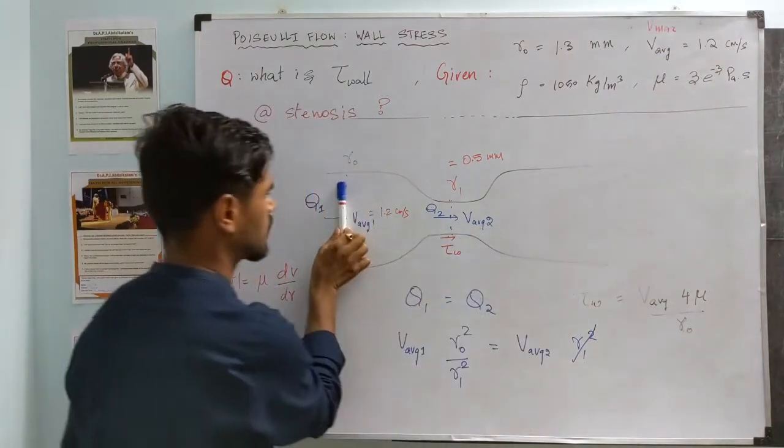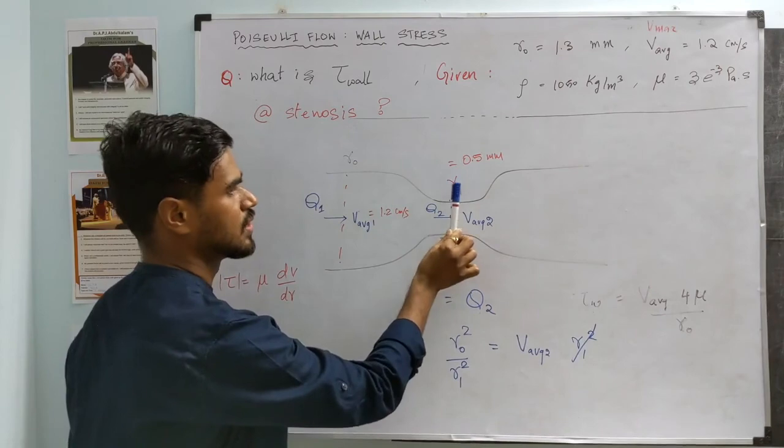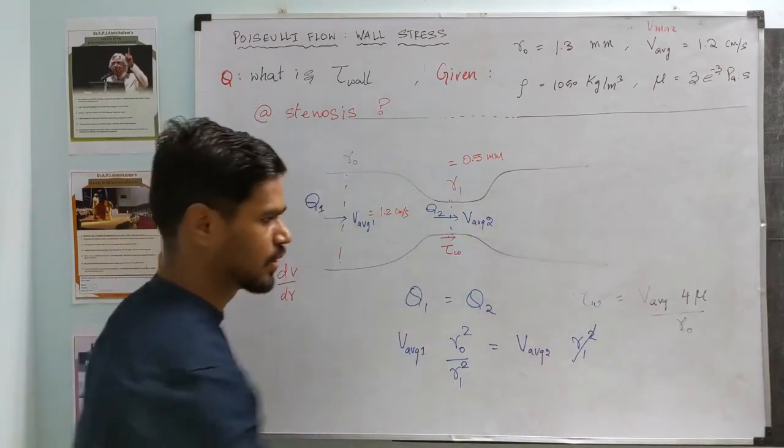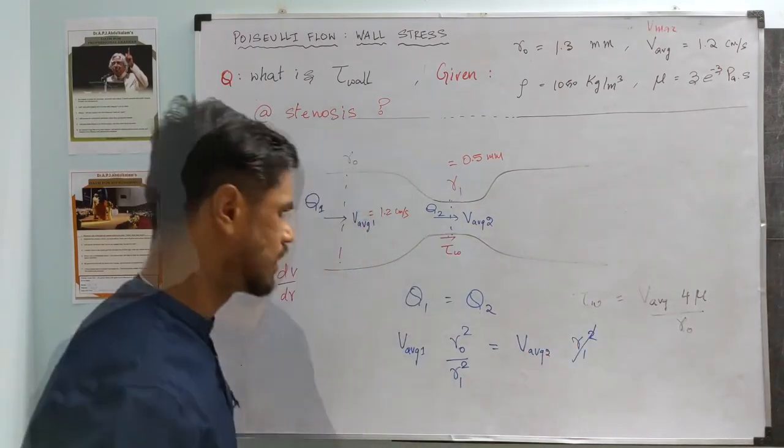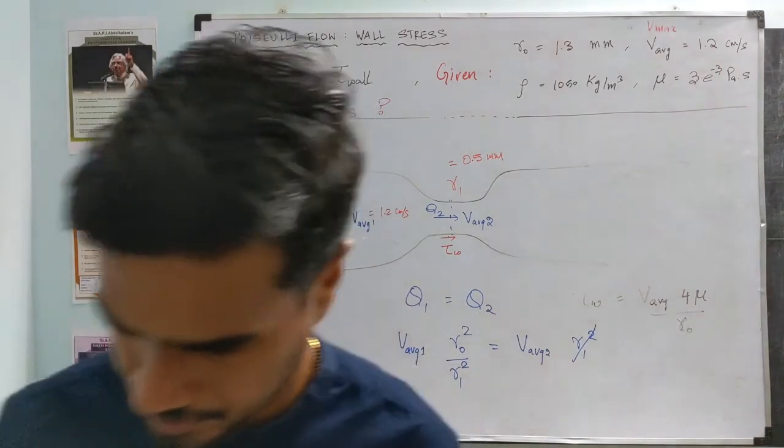Given v_avg at this cross-section, we can find out what the v_avg at this cross-section is. Once we know that, you can also go ahead and estimate what the wall shear stress is. Okay, with that, thanks for watching. I'll see you in a different video.